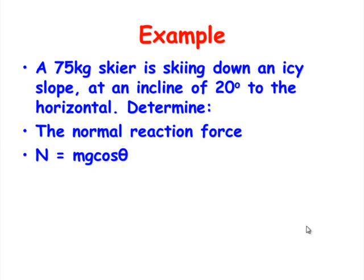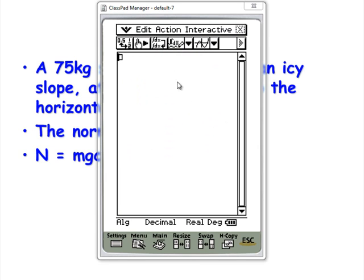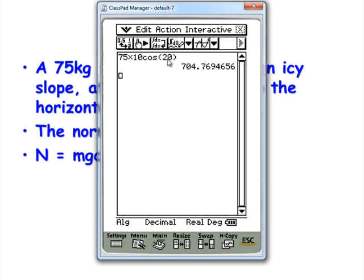So if we look at our equation, N equals M G cos theta. So if we bring up a calculator, we have M was 75 multiplied by G, which is 10, and then cos theta. So we have cos of 20. So we get a normal reaction force of about 705 newtons.